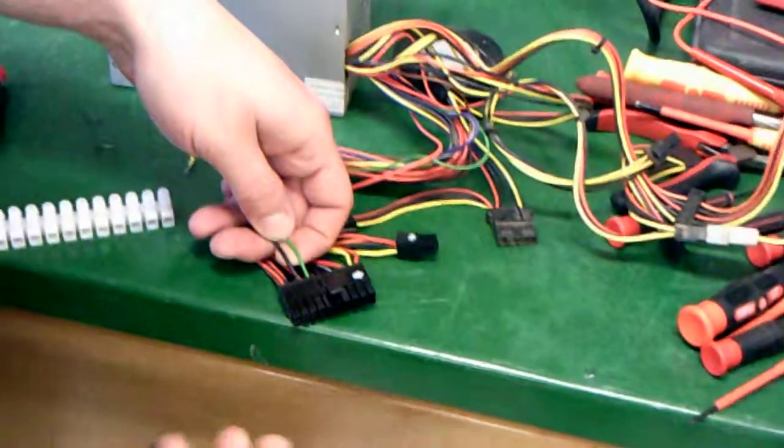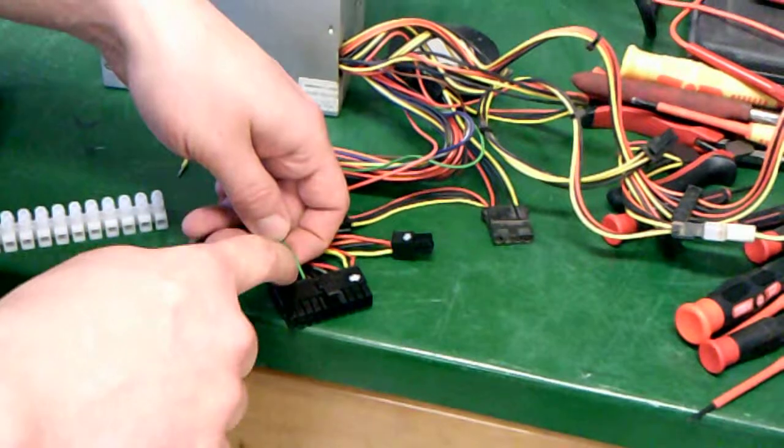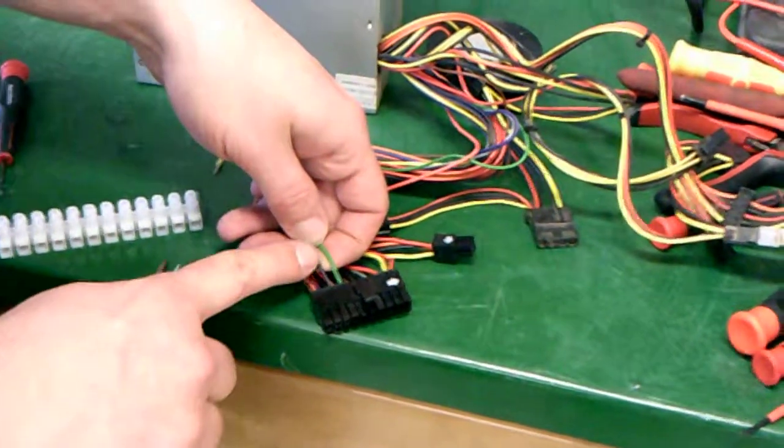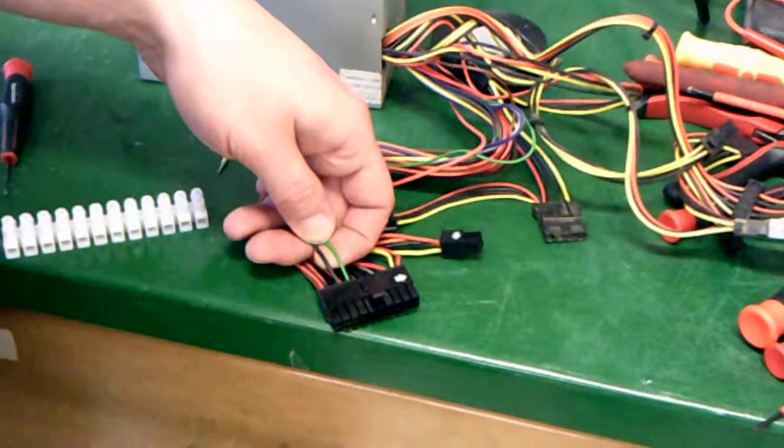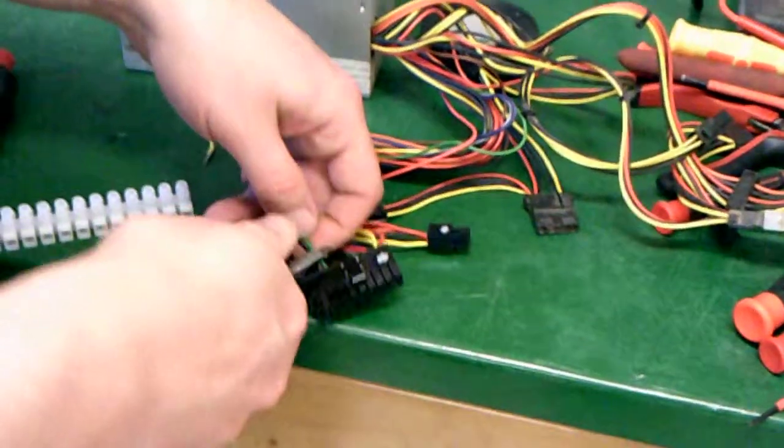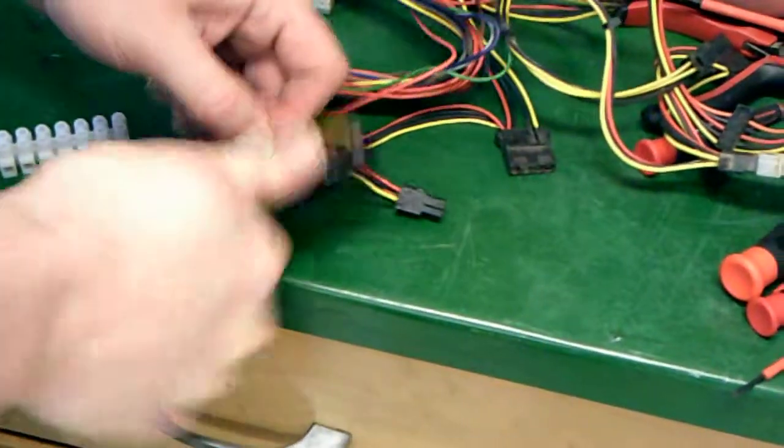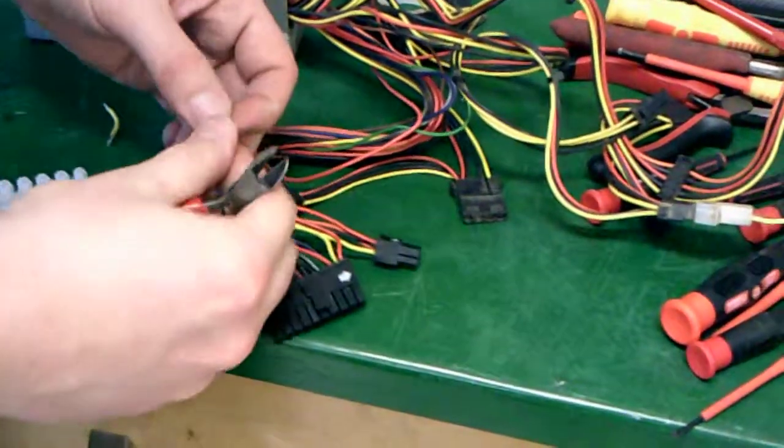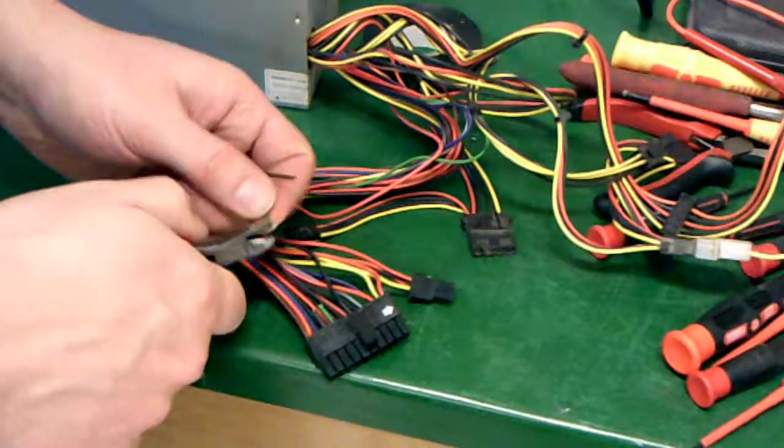What it's going to do is when you push the power button it connects this sense wire to a ground wire, and that basically tells the power supply to turn on. So all we're going to do is simply cut them off and strip them so that we can just trip it ourselves.